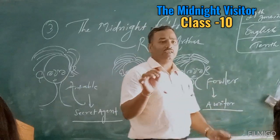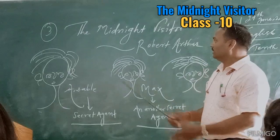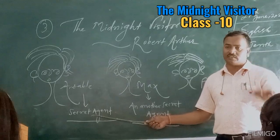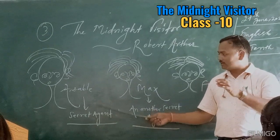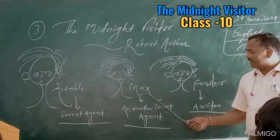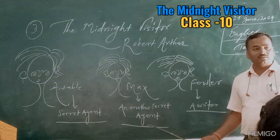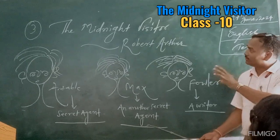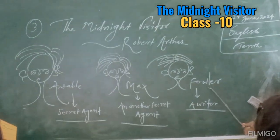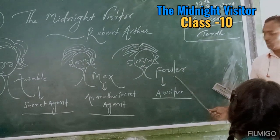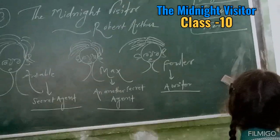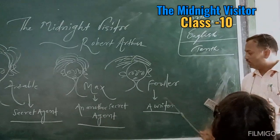In the previous classes, I have taught you in detail about the characters. Ausable is a senior secret agent. Next, there is a young boy whose name is Max, who is another secret agent. The third character is Fowler, who is a writer.